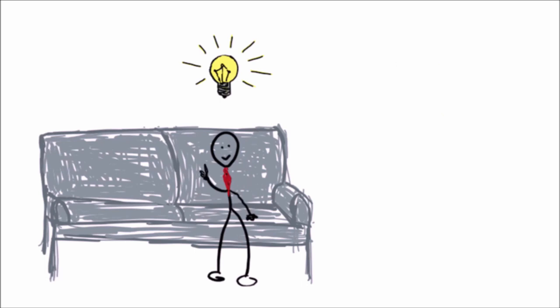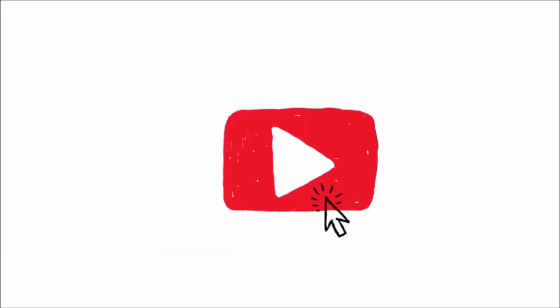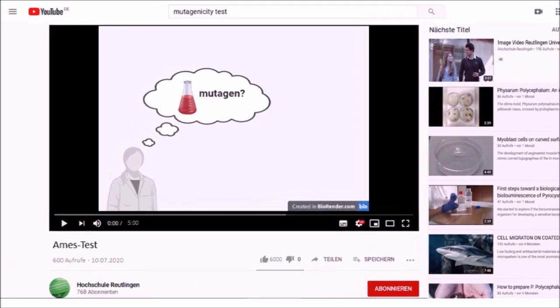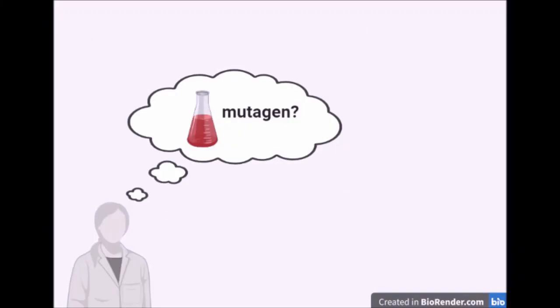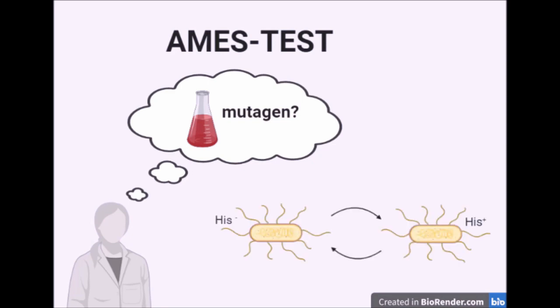Tom wants to learn more and turns on his computer. On YouTube he finds a video that arouses his interest. The mutagenicity of a chemical compound can be evaluated with the Ames test, which is a bacterial reverse mutation assay. It was developed in the mid-1970s. Nowadays a high variety of advanced Ames test forms are used, but they are all based on the same test principle.